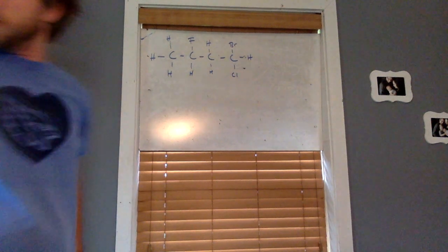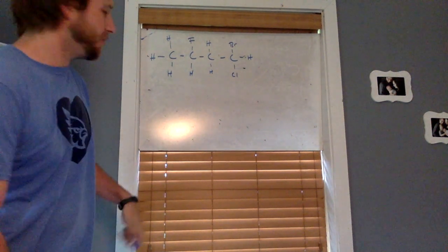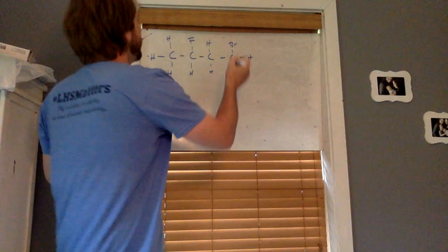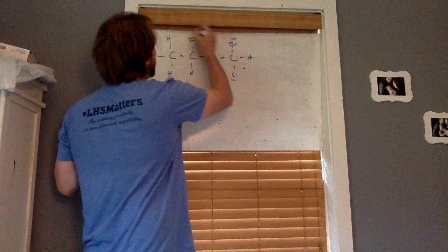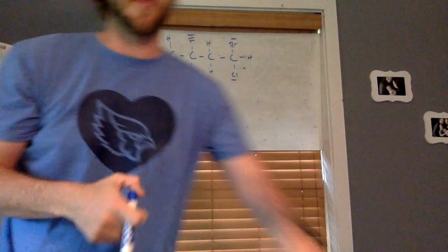I've got an example here on the board for us to look at. We've got a couple of important groups to look for. Looks like we've got a chlorine, a bromine, and a fluorine as we're going around the outside here.